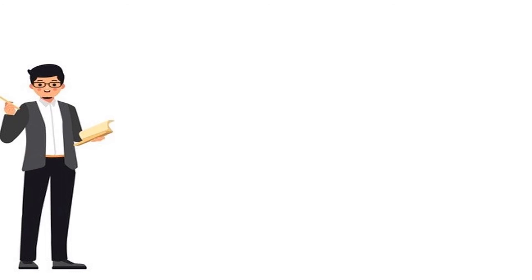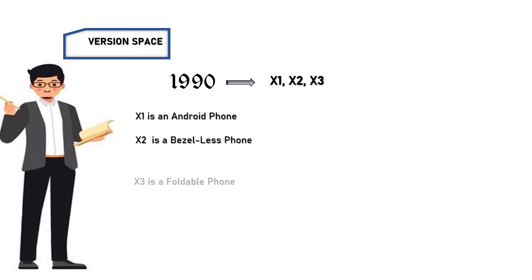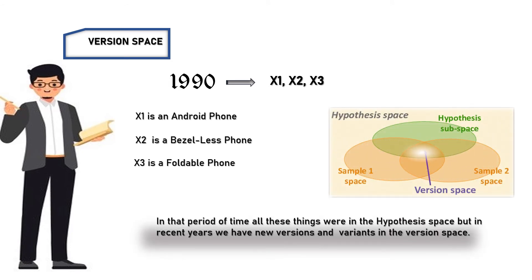Next is version space. In version space let us consider an example of a hypothesis in the year 1990, which consists of X1, X2, X3 and so on, where X1 is an android phone, X2 is a bezel less phone and X3 is a foldable phone. Next in the year 2020, consider a version space which consists of X1, X2, X3. From 1990 to 2020 we have migration. Such new space is a version space. In that period of time all these things were in the hypothesis space but in recent years we have new versions and variants in the version space.